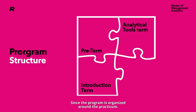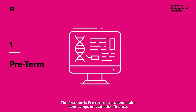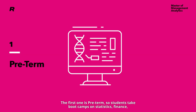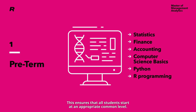Since the program is organized around the practicum, it also consists of four components. The first one is preterm, so students take boot camps on statistics, finance, accounting, and computer science basics in Python and R programming, and this ensures that all students start at an appropriate common level.